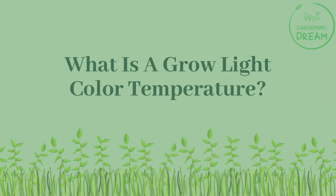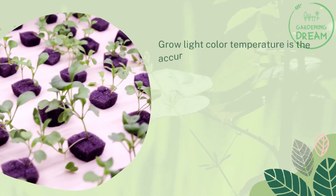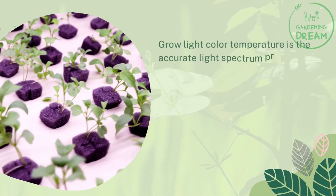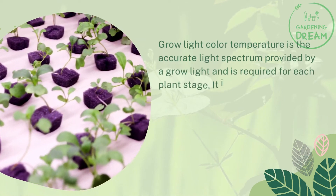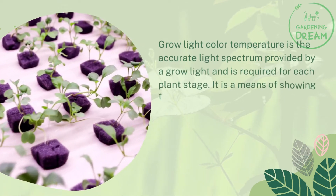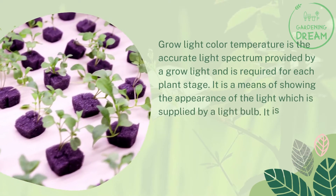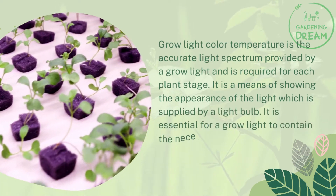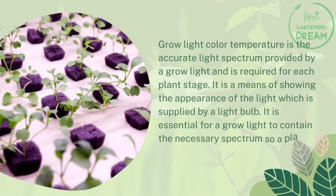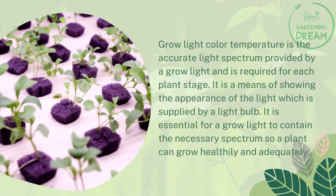What is a grow light color temperature? Grow light color temperature is the accurate light spectrum provided by a grow light and is required for each plant stage. It is a means of showing the appearance of the light supplied by a light bulb, and it is essential for a grow light to contain the necessary spectrum so a plant can grow healthily.